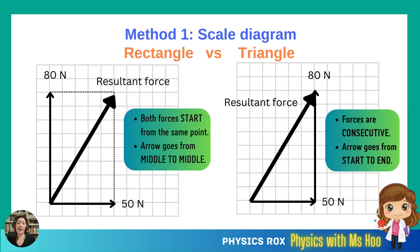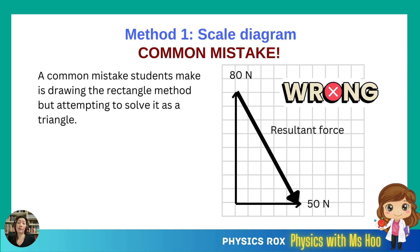I'll go through a common mistake that happens among students. Students sometimes start off with the rectangle method — both the 50 N and 80 N forces start from the same point — but then try to finish with a triangle method. They don't want to draw the rectangle, so they just create a triangle and draw a random resultant force starting from one random point ending on another random point. If you look at this, it's obviously wrong. The resultant force goes from the tip of one force to the tip of the other force — how would you know whether the force is moving up, down, left, or right? There's no clear start and no clear end. So be very clear about which method you want to use and avoid making this mistake.